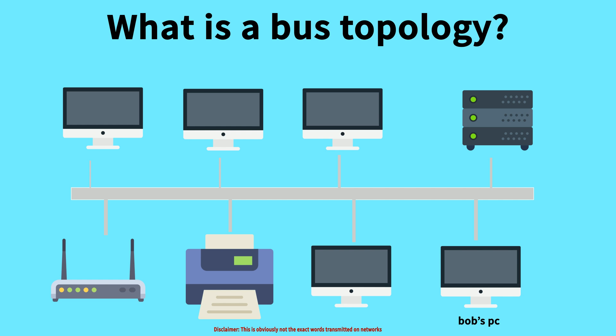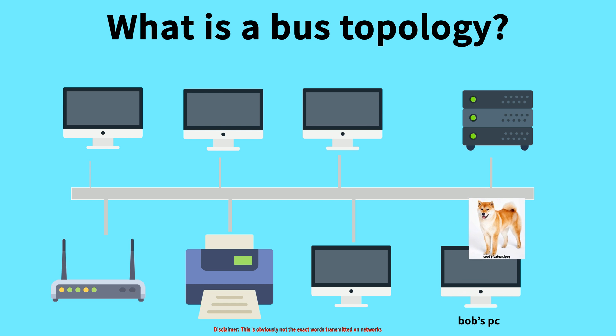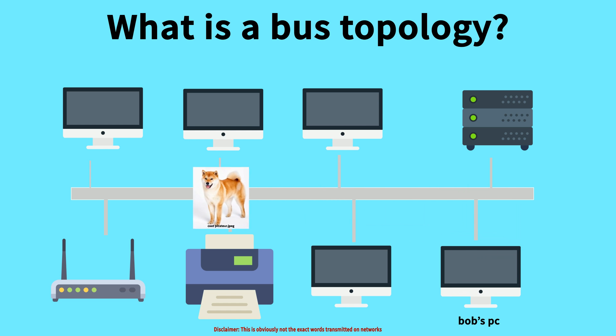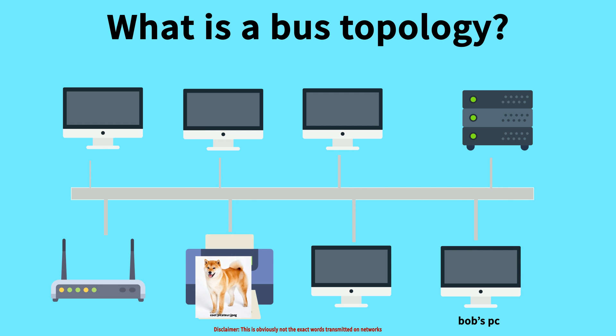For example, let's say Bob logs onto his PC and wants to print off a picture of his pet dog to hang up on his wall. He presses print on his computer, and the picture is sent along the wires from his computer to the printer, which then prints it. This might seem obvious, but in many network layouts, the picture would first pass through the router, and then the router would send it onto the printer.